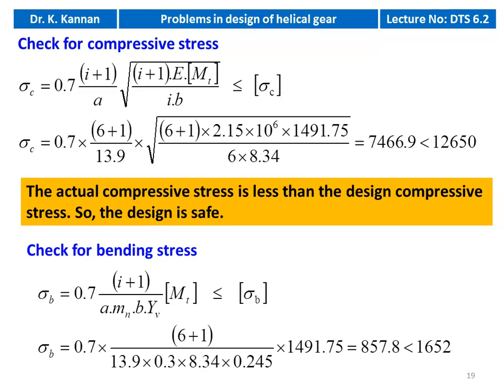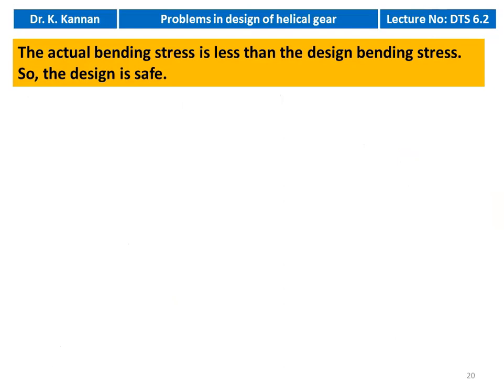Checking bending stress: σB = 0.7 × (6+1) / (13.9 × 0.3 × 8.34 × 0.245) × 1491.75 = 857.8 kg/cm², which is less than design bending stress of 1652 kg/cm². The actual bending stress is less than the design bending stress. The design is safe.